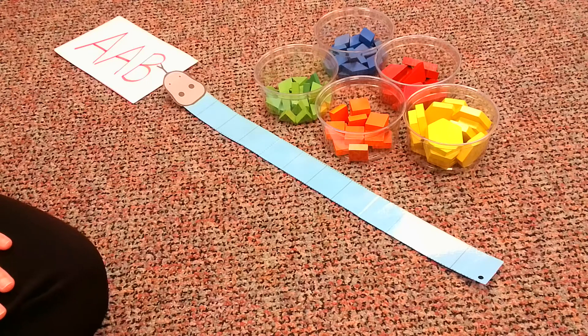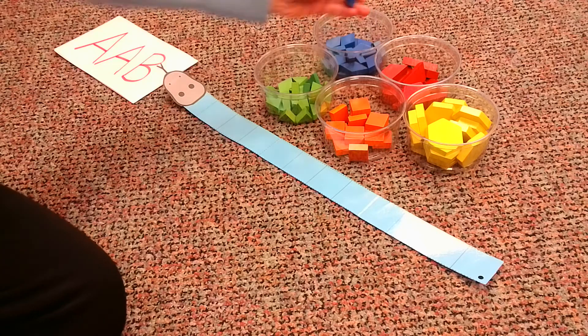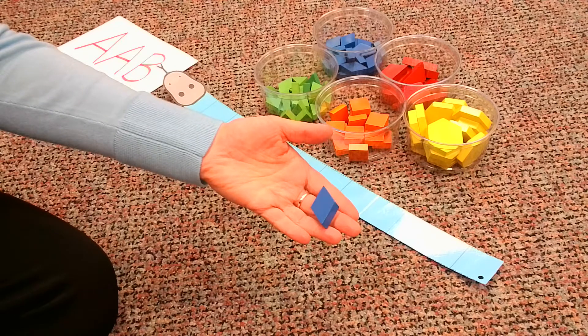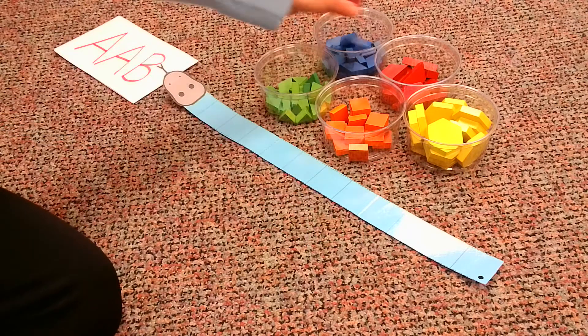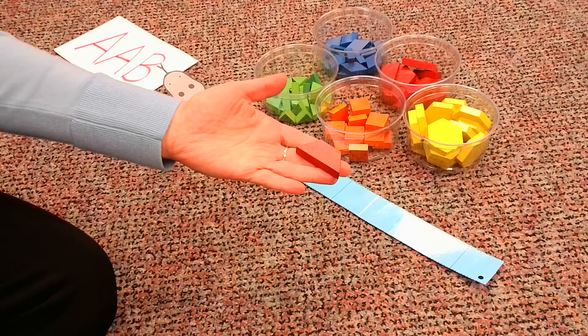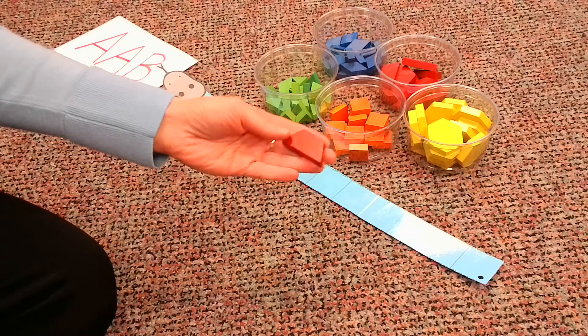So let's just review each shape that we have. I see a blue rhombus which has four sides, four points. I see a red trapezoid with four sides, four points.